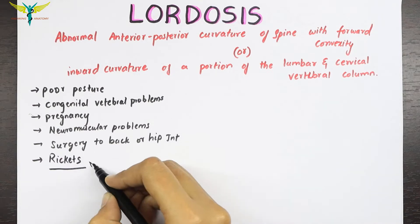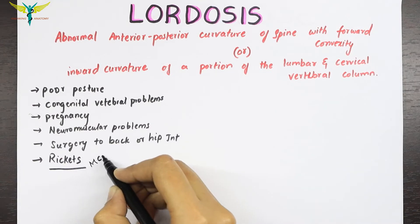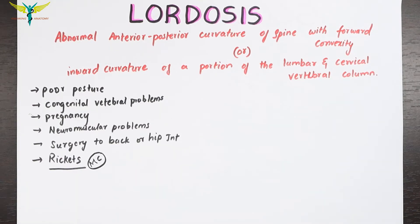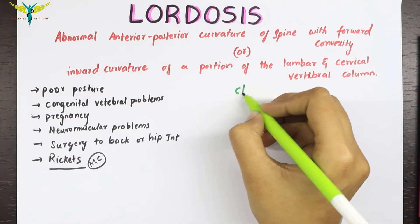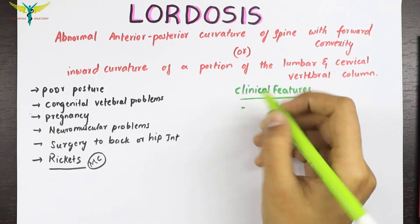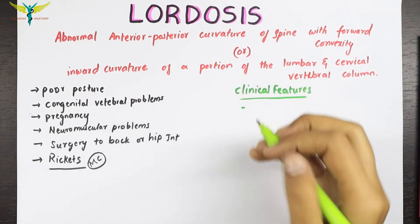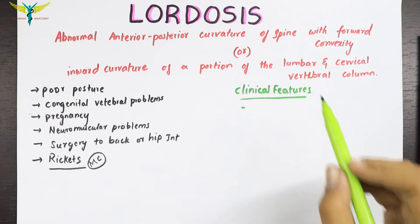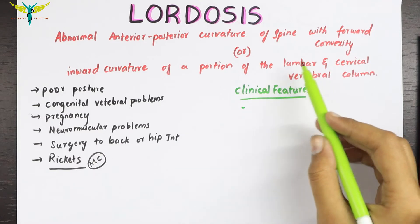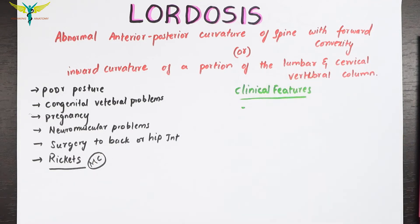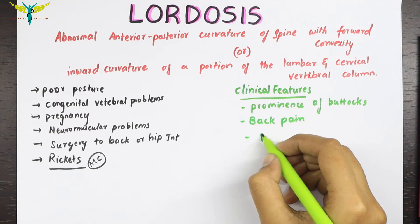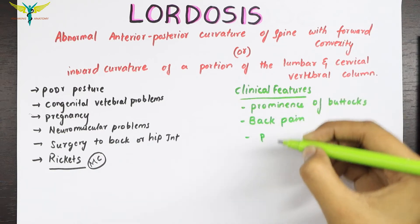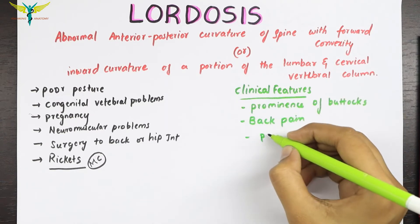Lordosis is most commonly noted in rickets. The clinical features of lordosis include prominence of the buttocks because of the curvature near the lumbar area, back pain, and pain which follows downwards into the leg.